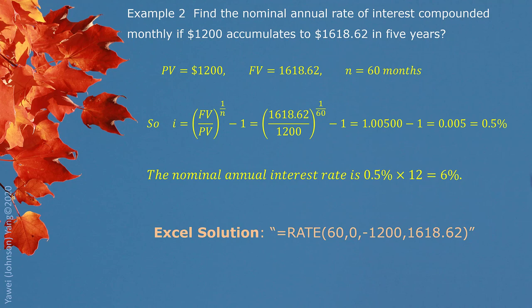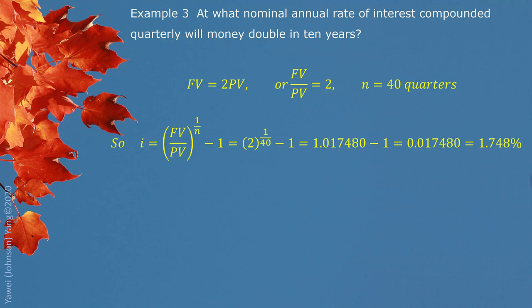Example 3. At what nominal annual rate of interest compounded quarterly will money double in 10 years? Money double means future value and present value, the ratio is 2. 10 years compounded quarterly. So we have compounding period 40 quarters.